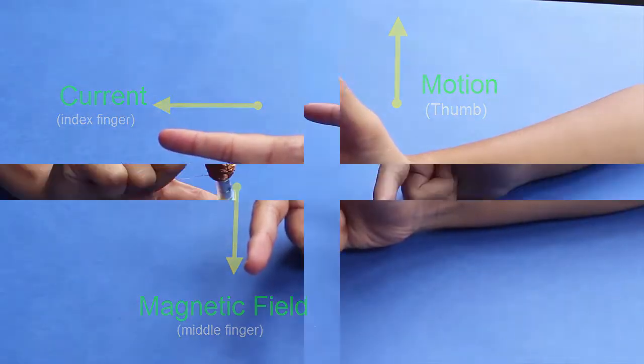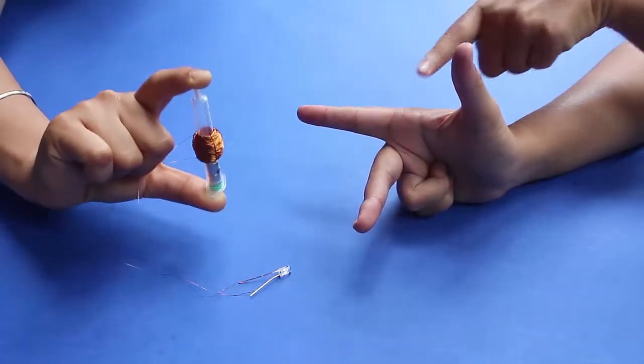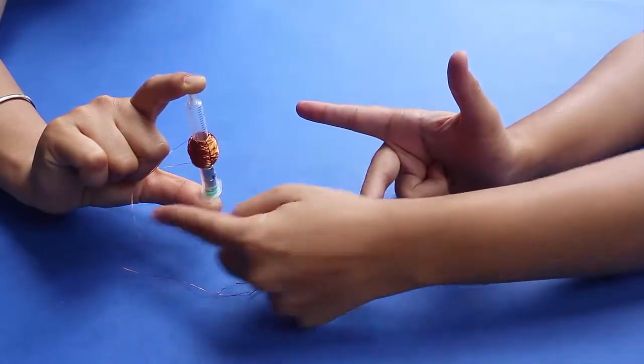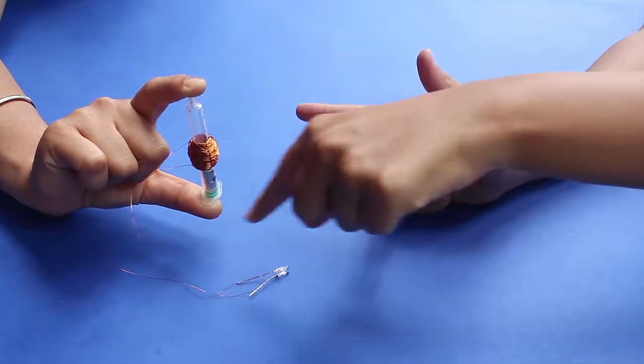The thumb represents the direction of the motion. The index finger represents the direction of the current and the middle finger represents the direction of the magnetic field.